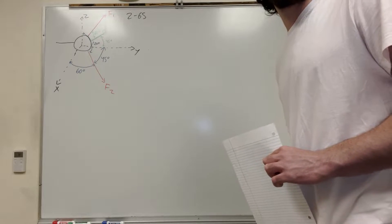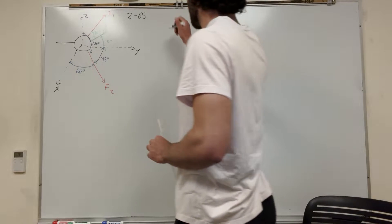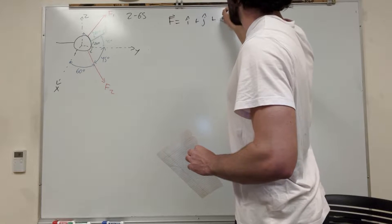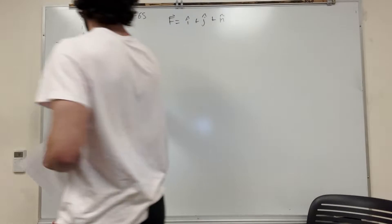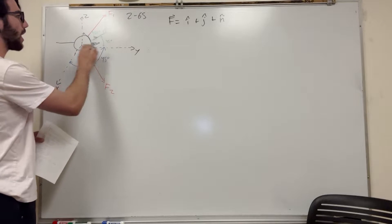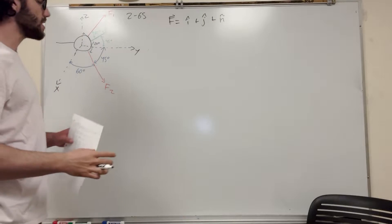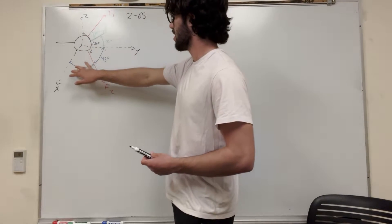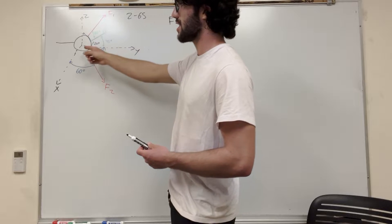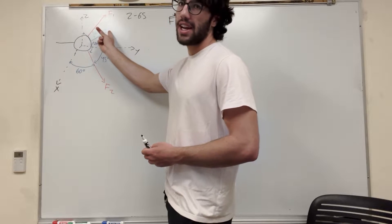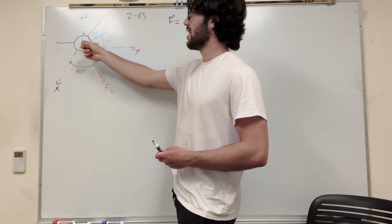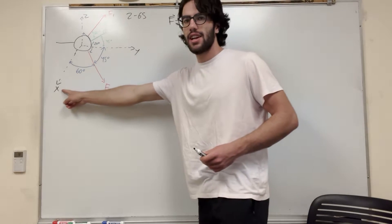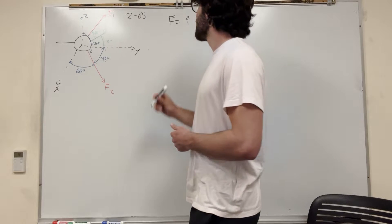First, we want to find the Cartesian vector form of each force. So let's start with the first one. The Cartesian vector form is basically I plus J plus K — we're looking for how much it's pulling in the X direction, how much in the Y direction, and how much in the Z direction. We're going to use sines and cosines. The angles given here are relative to the XY plane.